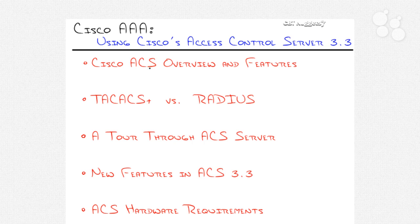We'll get into the protocols ACS uses to communicate — TACACS and RADIUS — then take a brief tour through the ACS server. In the second nugget of this series, we'll go through a full-blown implementation of Cisco's ACS server, setting up routers and access devices pointing to the ACS server as a central point of administration. We'll also talk about the new features in ACS 3.3 and the ACS hardware requirements.